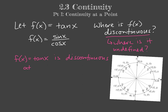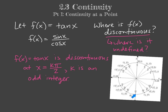We can write this answer concisely: we're discontinuous every time we hit an odd pi over 2, so x equals k pi over 2 where k is any odd integer — giving us pi over 2, 3 pi over 2, 5 pi over 2, 7 pi over 2, and so on. If you just answered at pi over 2 and 3 pi over 2, that's totally fine. I'm just giving the fully mathematically correct answer.